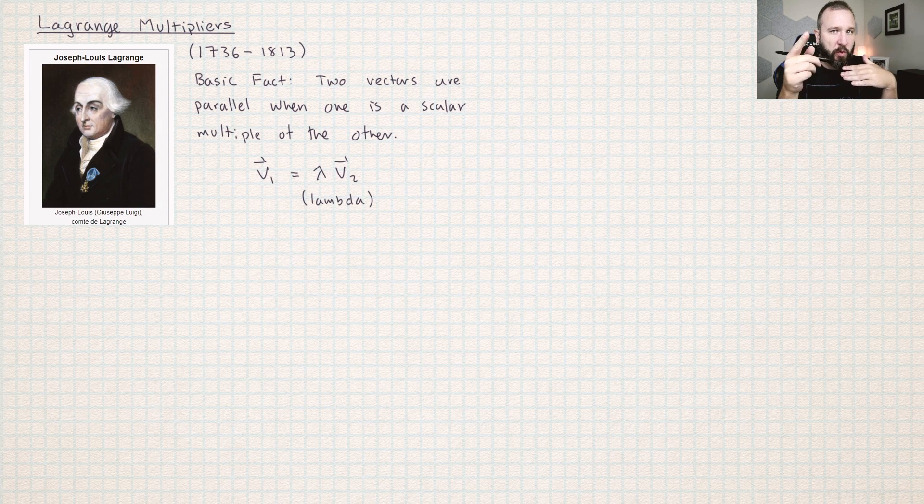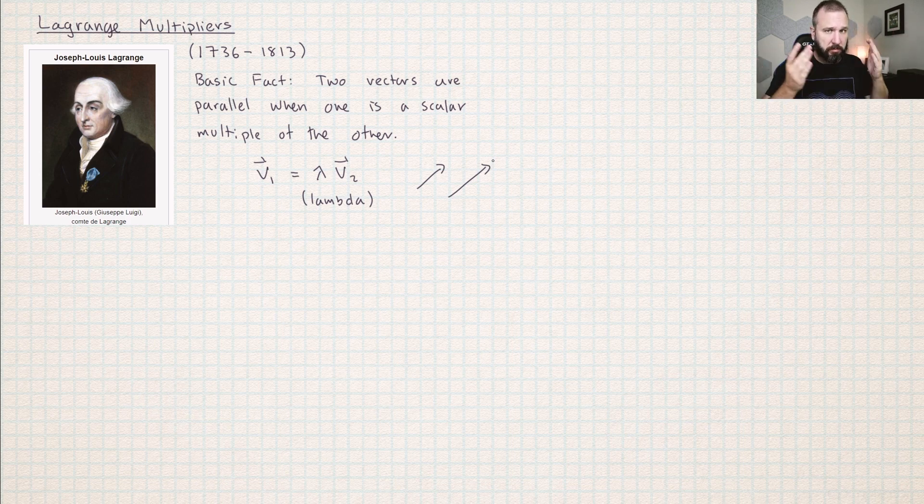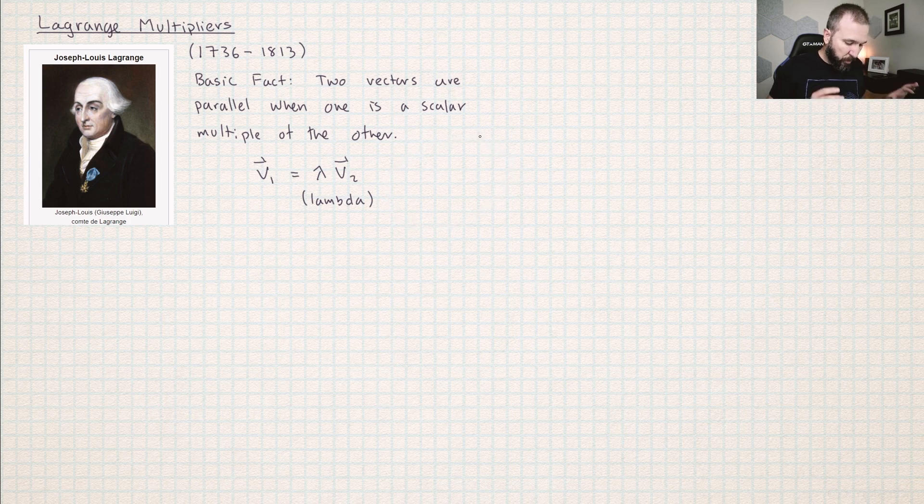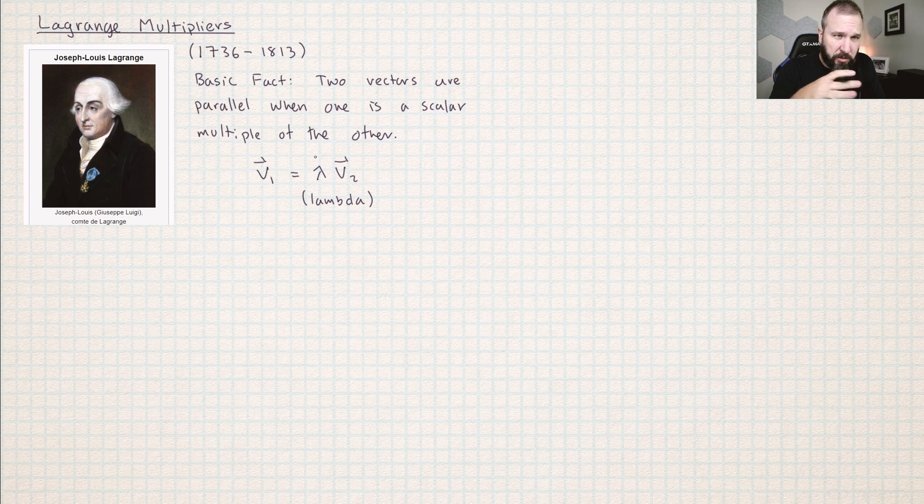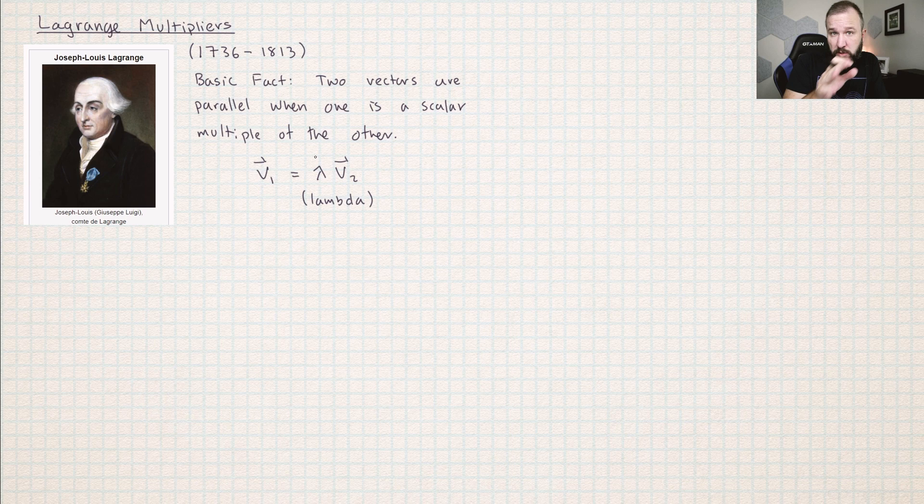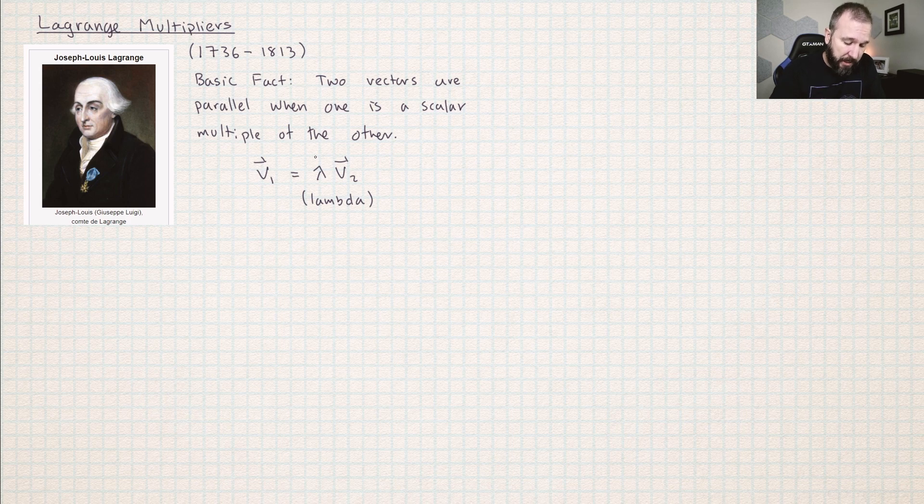So I just need to get this basic fact out of the way. Two vectors are parallel to each other when one is a scalar multiple of the other. If this is a vector and that's two times the vector, then that points in the same direction, just has a different length. So we usually use this letter, the letter lambda, in this context.